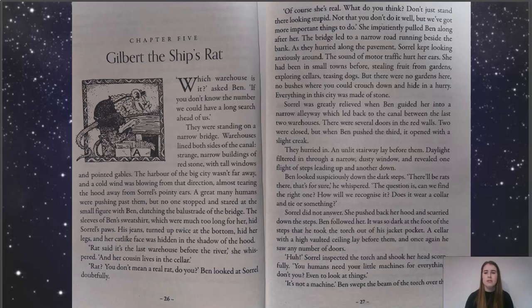The bridge led to a narrow road running beside the bank. As they hurried along the pavement, Sorrel kept looking anxiously around. The sound of motor traffic hurt her ears. She had been in small towns before, stealing fruit from gardens, exploring cellars and teasing dogs. But there were no gardens here, no bushes where you could crouch down and hide in a hurry. Everything in this city was made of stone. Sorrel was greatly relieved when Ben guided her into a narrow alleyway, which led back to the canal between the last two warehouses.